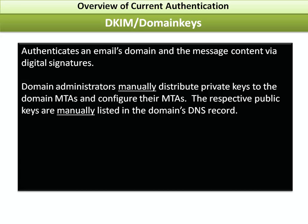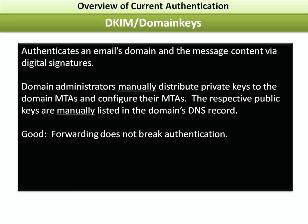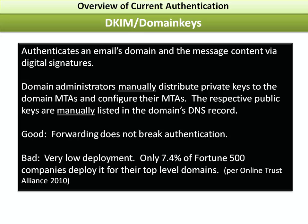A more sophisticated authentication scheme, DKIM, and the related domain keys, will authenticate an email's domain and the message content via digital signatures. Domain administrators have to manually distribute the private keys to the domain MTAs and configure their MTAs, and the respective public keys are then manually listed in the domain's DNS record. This is good because forwarding does not break authentication. However, deployment is very low — only 7.4% of Fortune 500 companies deploy it for their top-level domains.